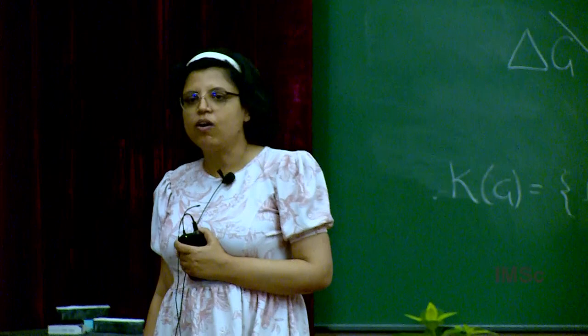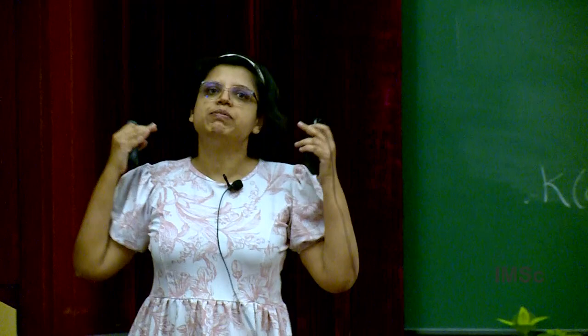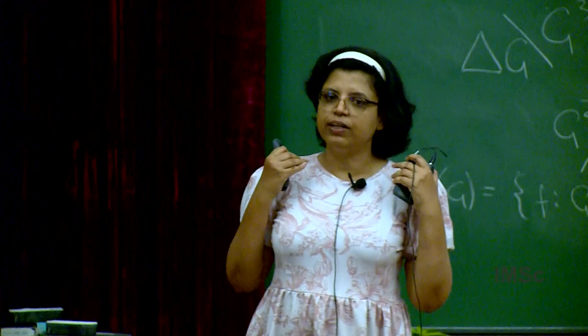So what are pulsars? Pulsars are a kind of dead stars called neutron stars. What are neutron stars? When a star — say, moderately massive, about 10 times heavier than the sun — dies, what happens? Let me first tell you what the death of a star means.